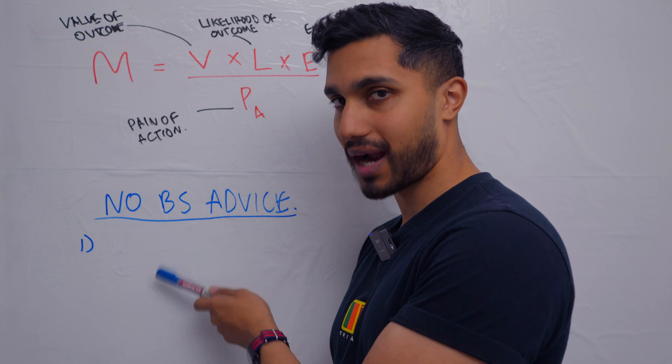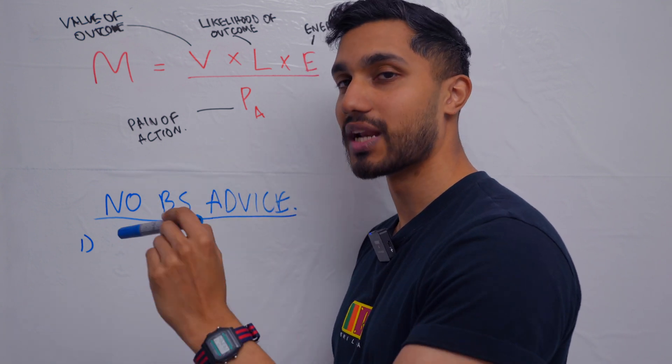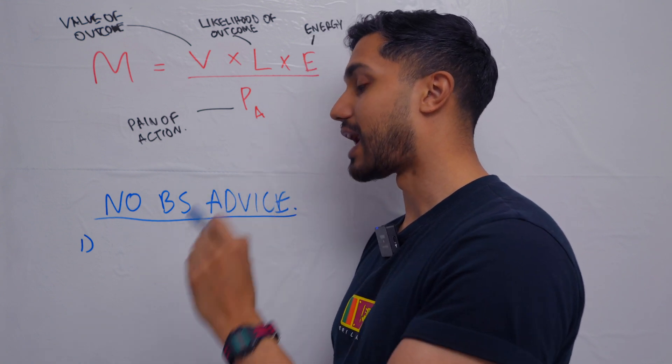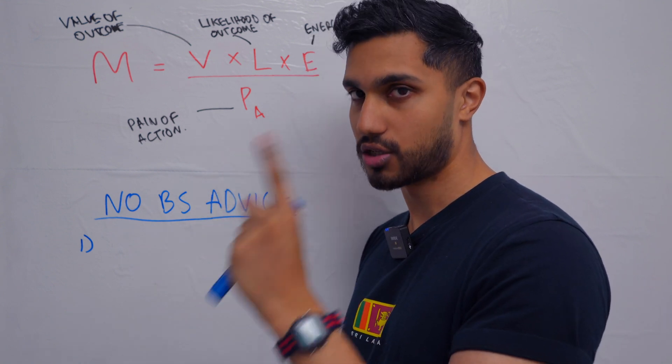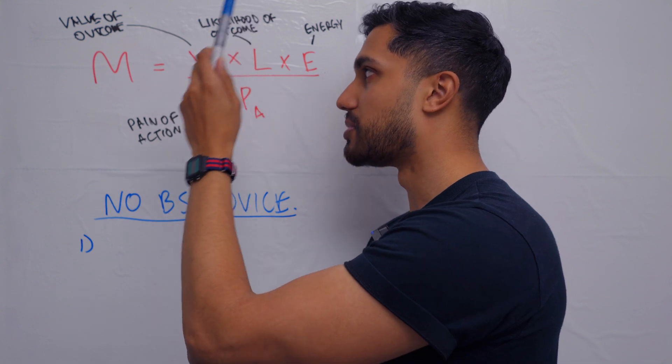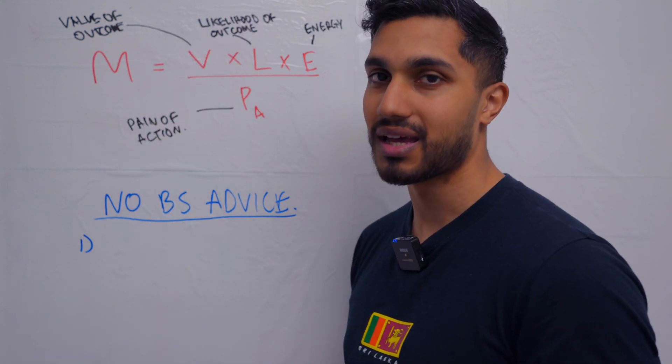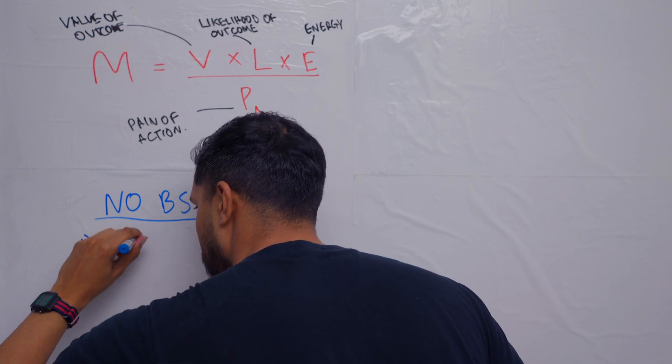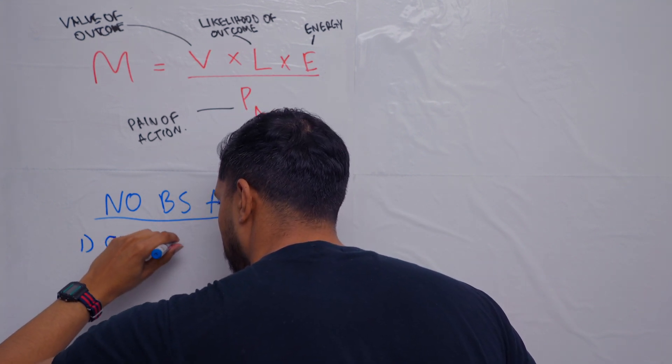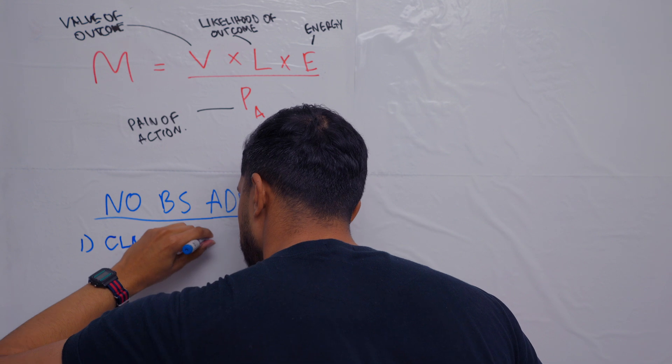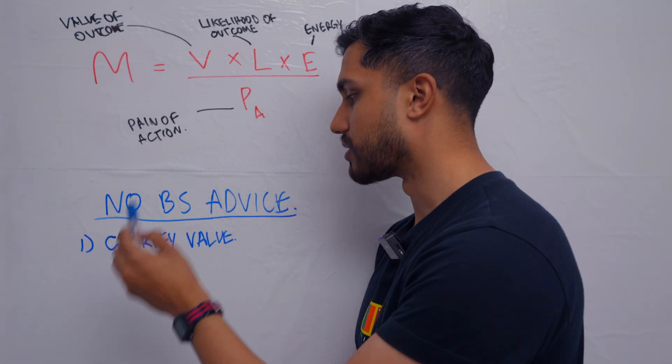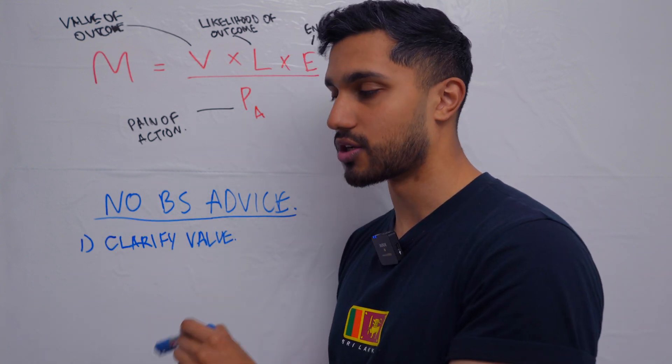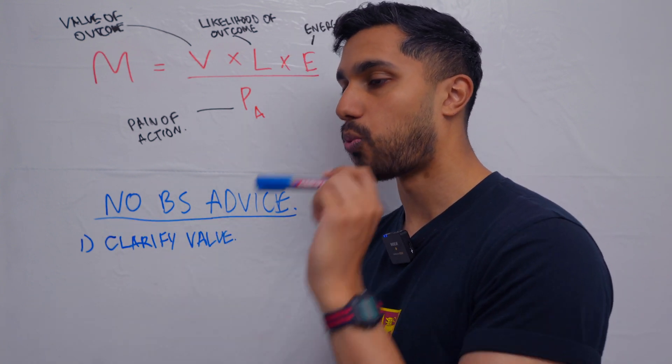This is the no BS practical advice that you can do today, and maybe if it's too late, tomorrow, to actually motivate yourself to do anything that you want. Now pick one action to do. The first thing you need to do to increase the perception of the value of the outcome is to clarify the value with yourself. Write this down.